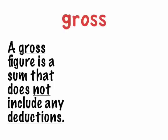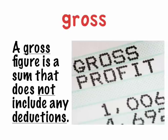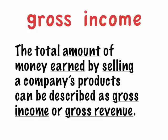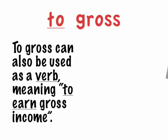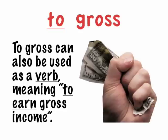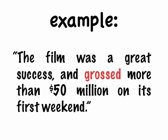Gross. A gross figure is a sum that does not include any deductions. For example, the total amount of money earned by selling a company's products can be described as gross income. Another term for gross income is revenue. The company's gross sales have risen 20% in the last quarter alone. To gross can also be used as a verb, meaning to earn gross income. The film was a great success and grossed more than $50 million on its first weekend.